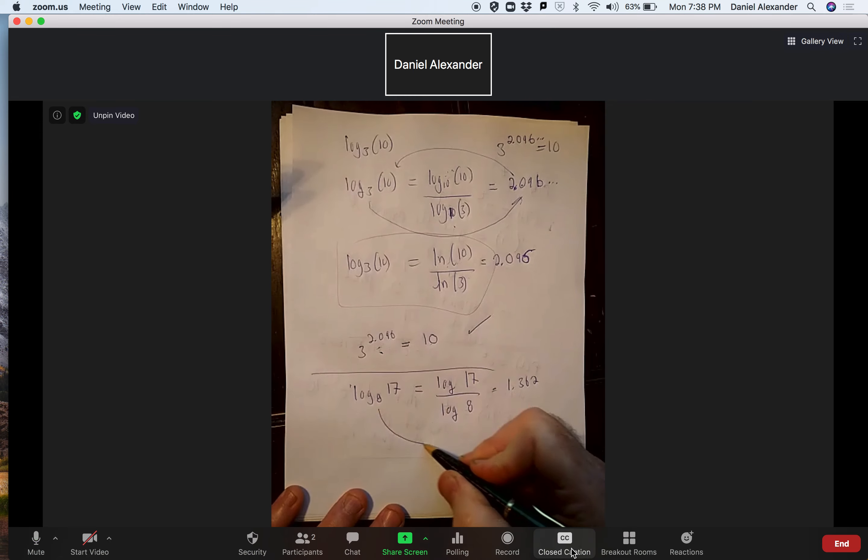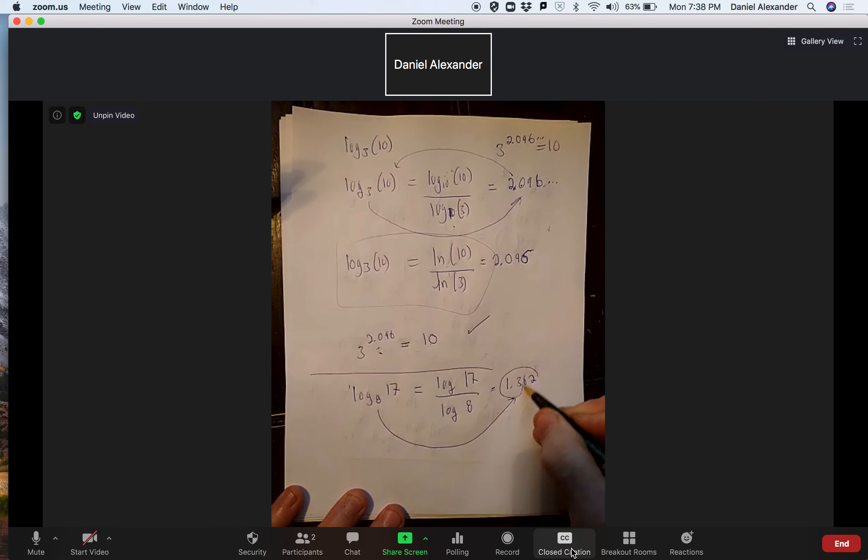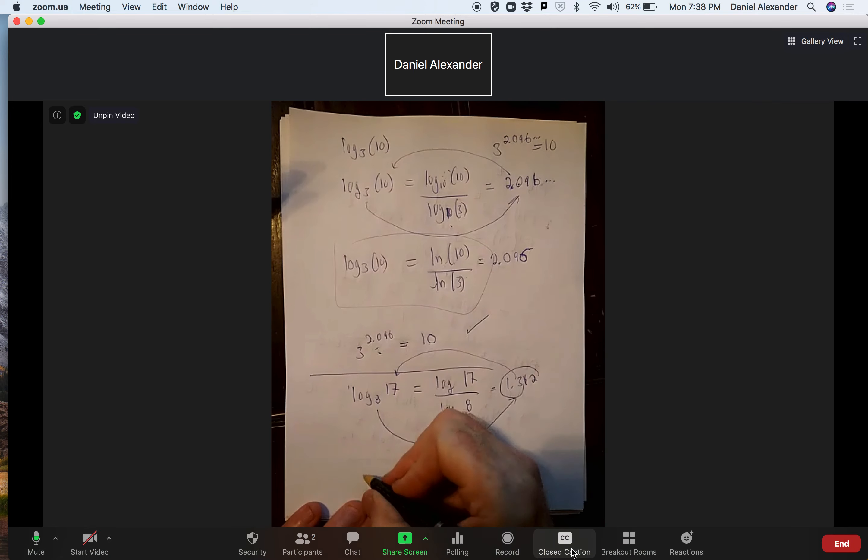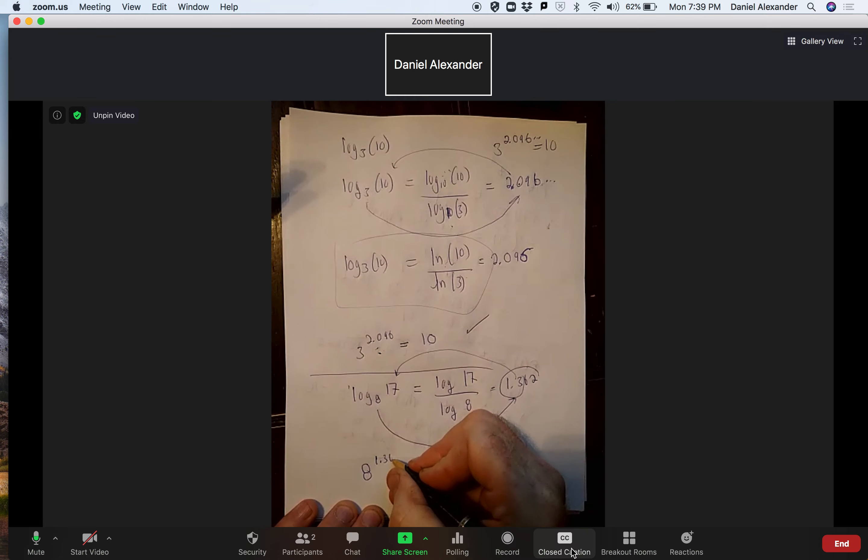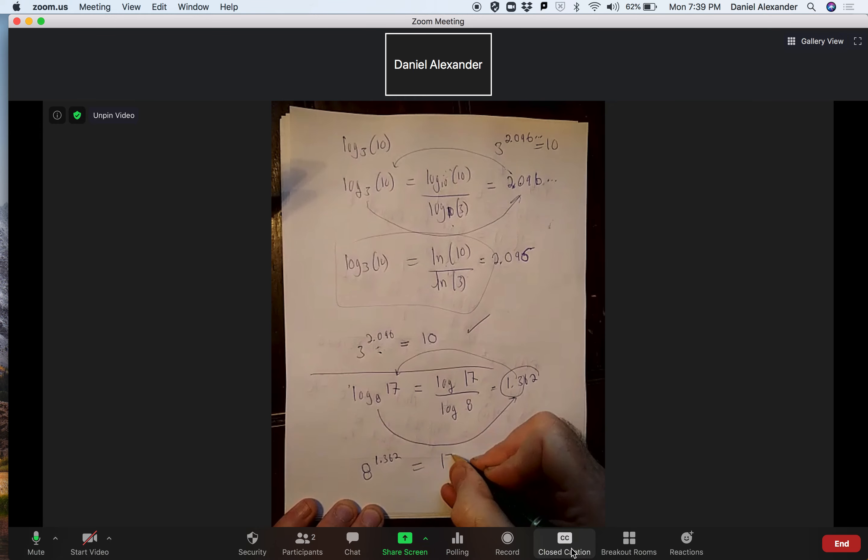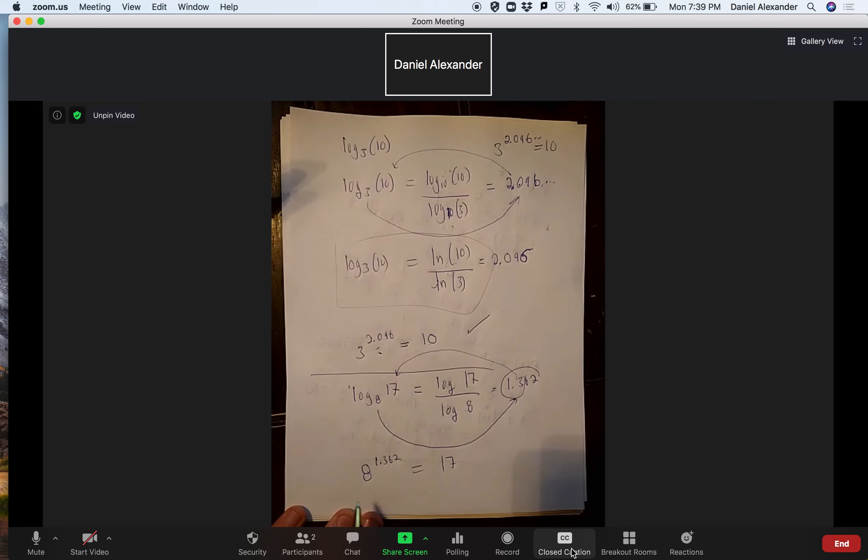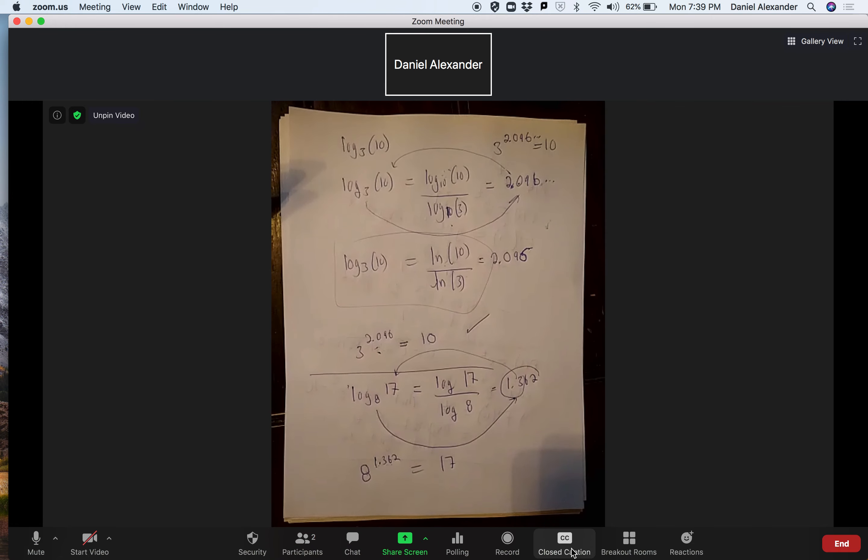And let's see if that makes sense. That's saying that 8 to this number should give me 17. I just want to look at it. 8 to 1.362 equals 17. I'm just saying, does this make sense? Well, 8 to the 1, so that's going to be bigger than 8 but less than 64. And exponents work funny. So this is going to be a little bit more than 8, but nowhere near as big as 8 squared. So that makes, to me, that makes sense.